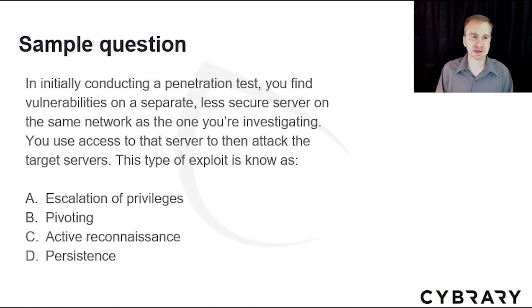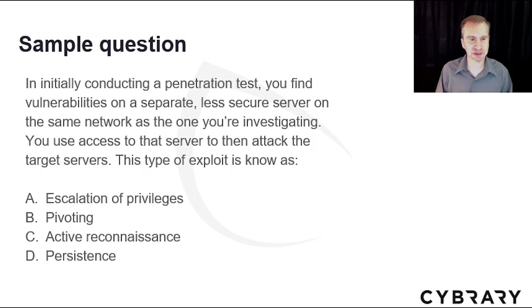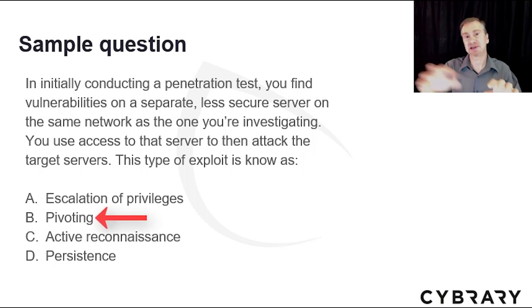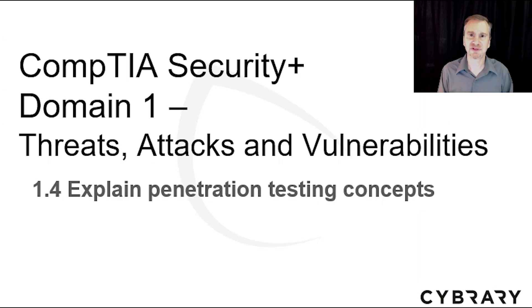Question 2: In initially conducting a penetration test, you find vulnerabilities on a separate, less secure server on the same network as the one you're investigating. You use access to that server to then attack the target servers. This type of exploit is known as B, pivoting — where you start on one system and pivot to others that you really want to attack. This concludes the video for section 1.4. Please refer to your study notes for more information on this topic.